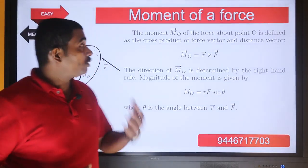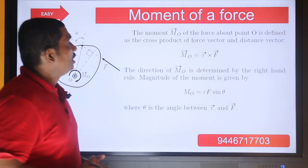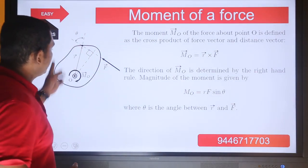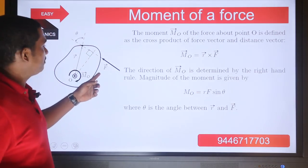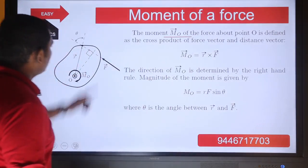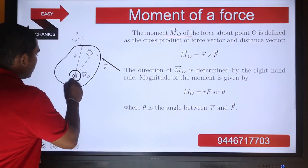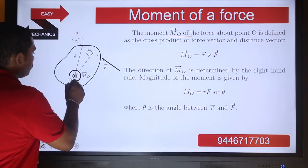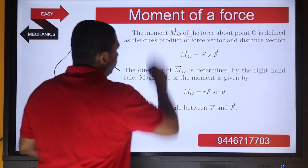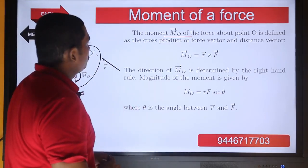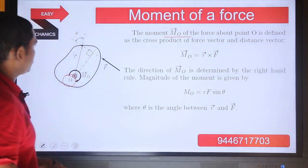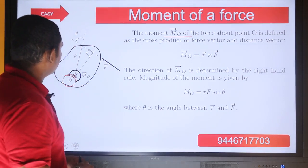We are going to discuss what is the moment of a force. The moment of a force about a point O — here we have a body acted upon by a force F, and we are going to find the moment M0 of this force F about the point O. The moment of the force about the point O is defined as the cross product of the force vector and the distance vector.